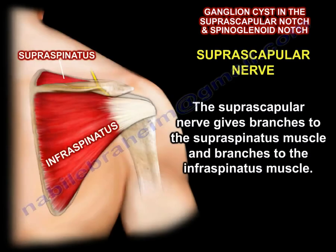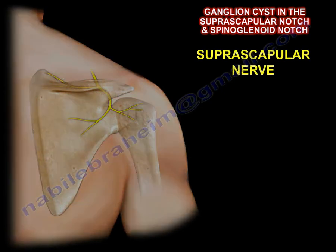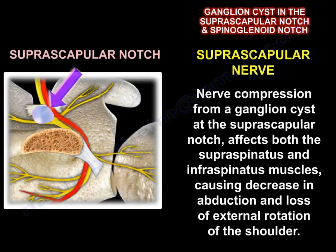The suprascapular nerve gives branches to the supraspinatus muscle and branches to the infraspinatus muscle. Nerve compression, for example from a ganglion at the suprascapular notch, affects both the supraspinatus and the infraspinatus muscles, causing decreased abduction and loss of external rotation of the shoulder.